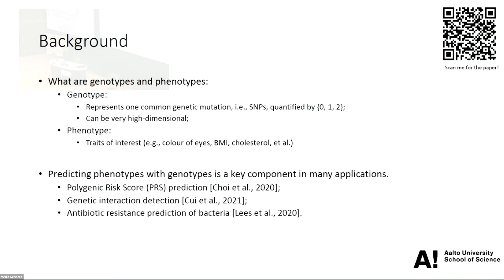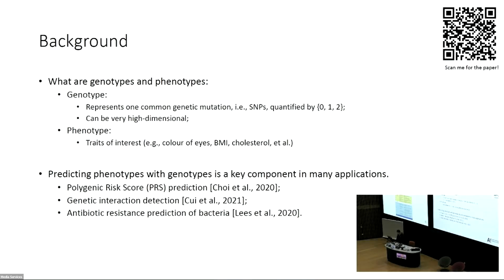In this paper, we deal with a specific application in genetics, which is genotype-phenotype prediction. In case you don't have a genetics background, I will introduce some terminologies. A genotype is a typical genetic mutation, also called SNPs. SNPs can only take values from 0, 1, and 2, and in practice they can be potentially very high dimensional — it's easy to have tens of millions of SNPs in your dataset.